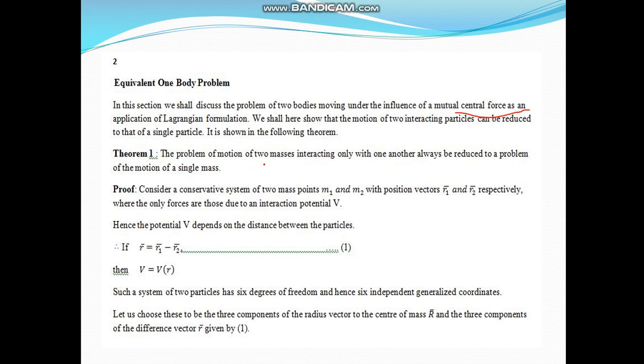The problem of motion of two masses interacting only with one another always be reduced to a problem of motion of single mass. We have two mass particles, we need to find the Lagrangian for both, and the result will be a Lagrange's equation for a single particle.